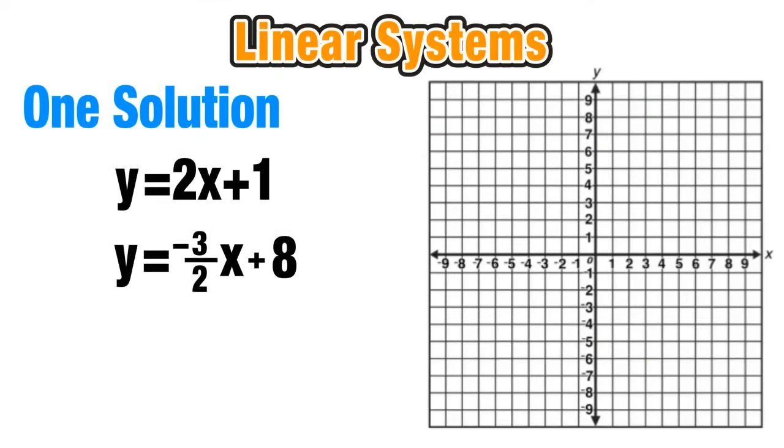So let's start with an example where there will be one solution. We have two linear equations here, y equals 2x plus 1. So we'll go ahead and graph that by starting at the y-intercept using the slope to construct the line. Now we're ready for the second line, y equals negative 3 over 2x plus 8. That's in mx plus b form. So again, I start at the y-intercept and graph the line.